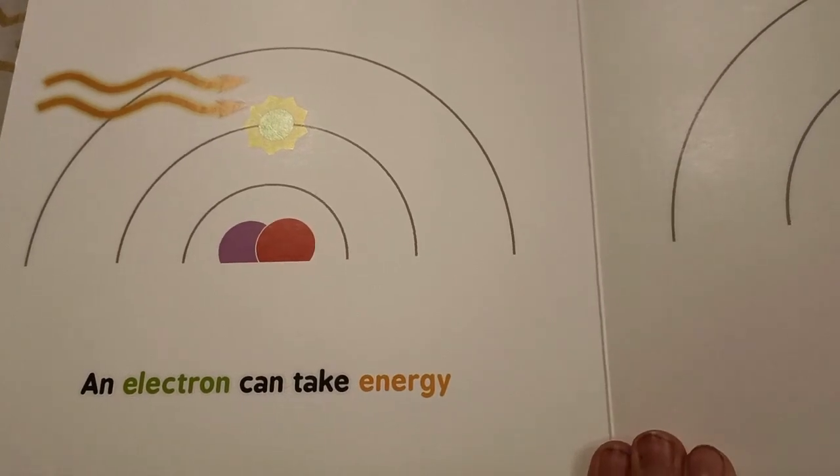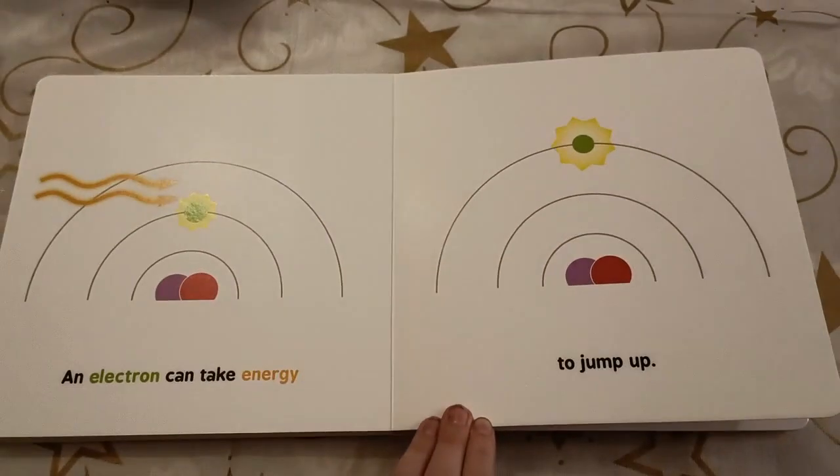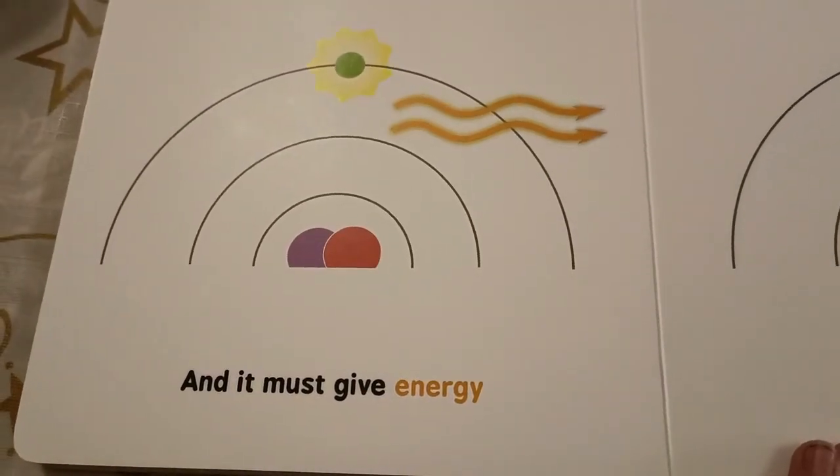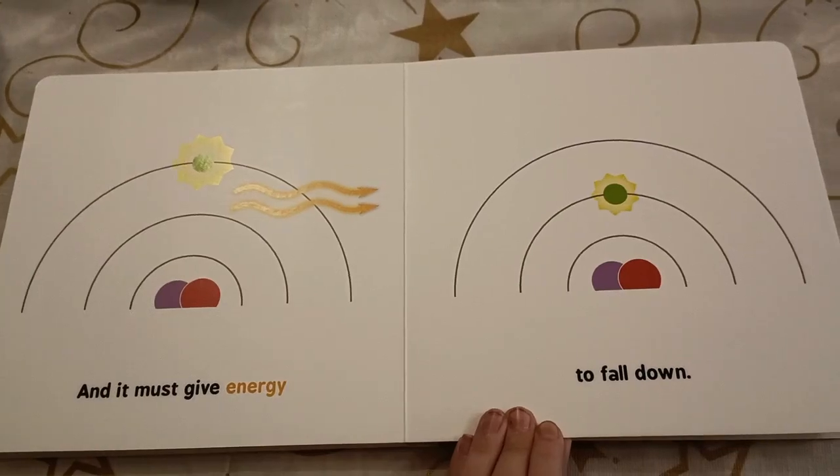An electron can take energy to jump up, and it must give energy to fall down.